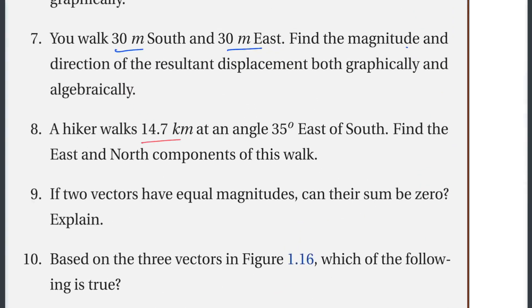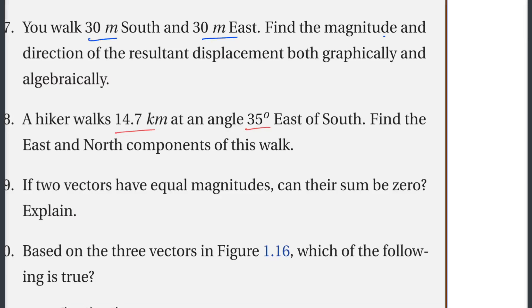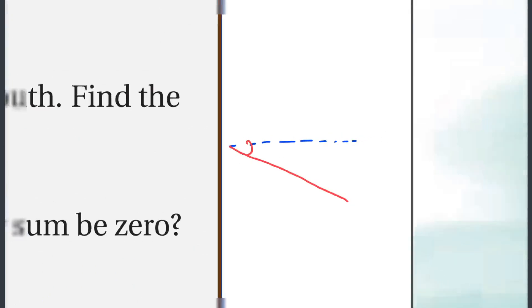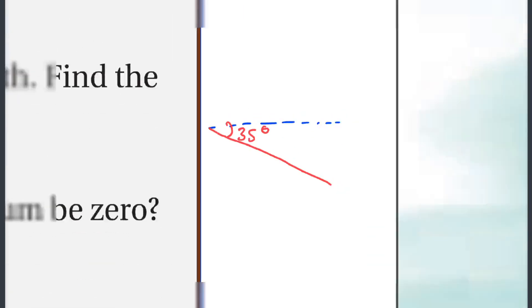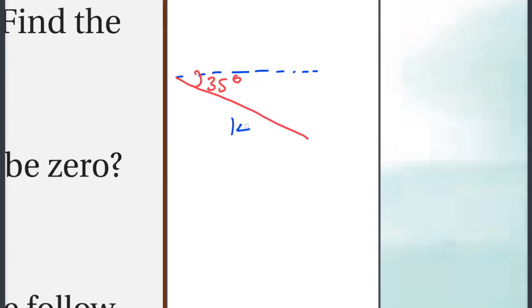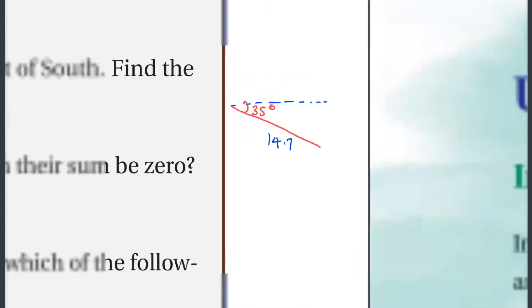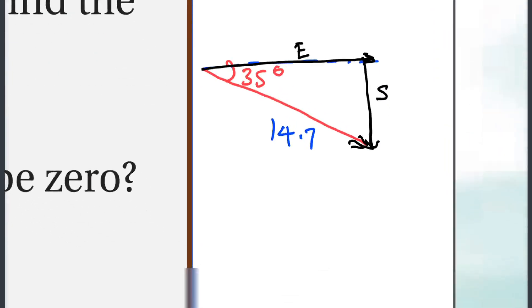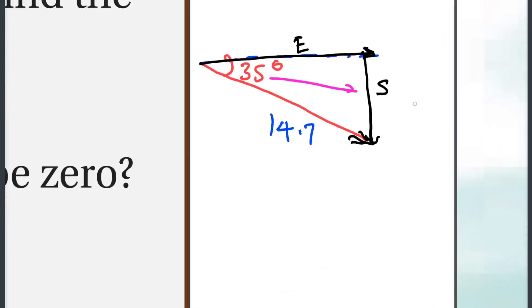A hiker walks 14.7 kilometers at an angle of 35 degrees east of south. We need to find the south and east components of this displacement. The hypotenuse is 14.7 km and the angle is 35 degrees.